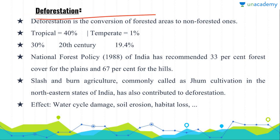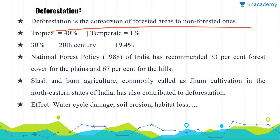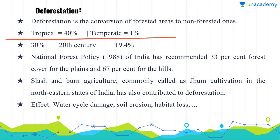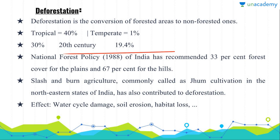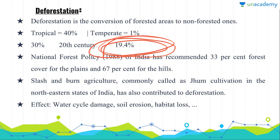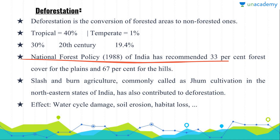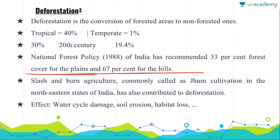Now we have deforestation. Deforestation is the conversion of forested area to non-forested one. The tropical area has deforestation of approximately 40% as compared to the temperate which has only 1%. In the beginning of the 20th century we had 30% forest cover, and by the end of this century we had only 19.4% forest cover. The National Forest Policy 1988 of India has recommended 33% forest cover for plains and 67% for hills.